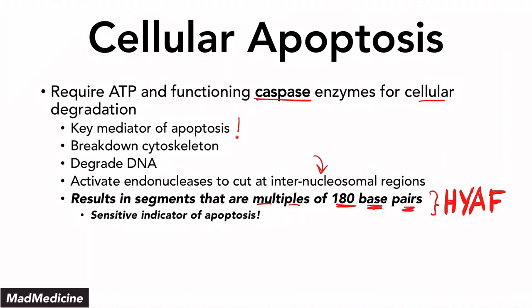A mnemonic to remember the 180 base pairs: normally a cell is moving forward, and then it decides to kill itself — when that happens, you have a 180-degree turn to go backwards. That's just something to help it stick in your mind.